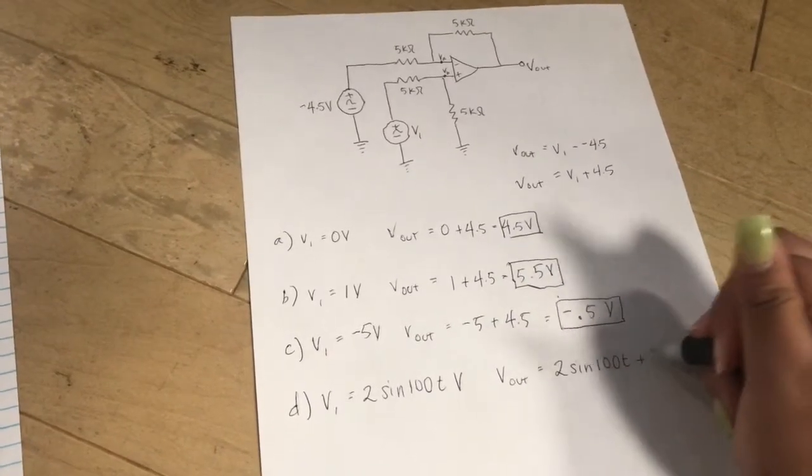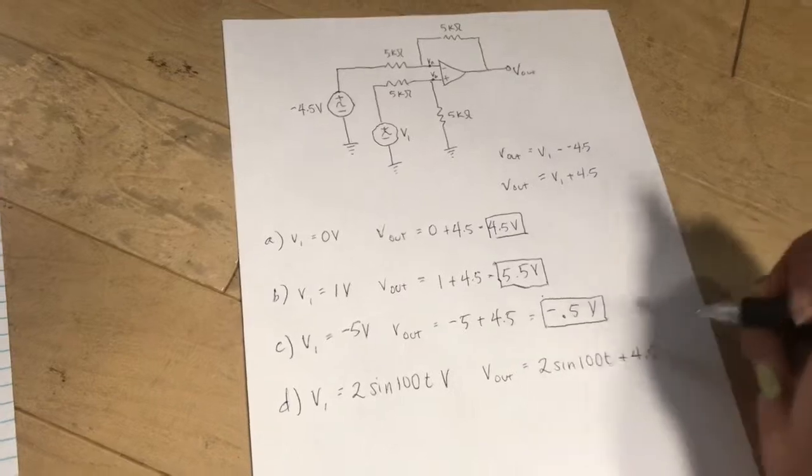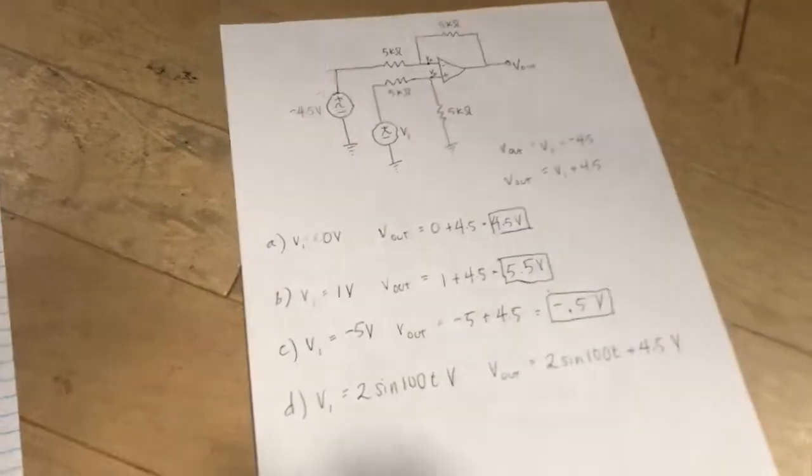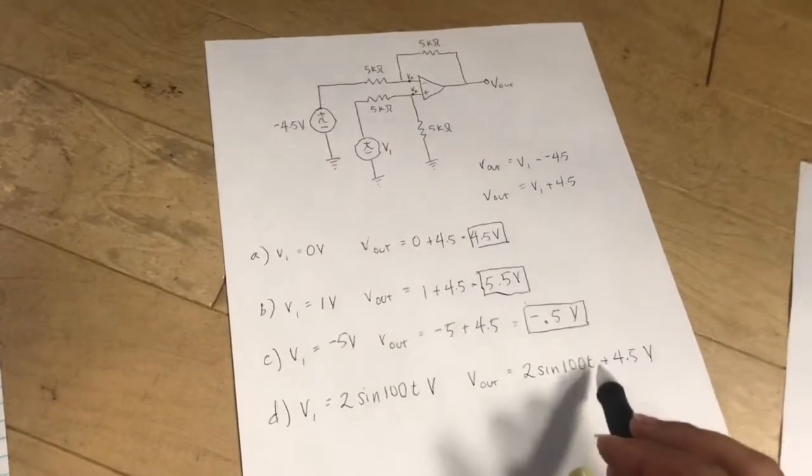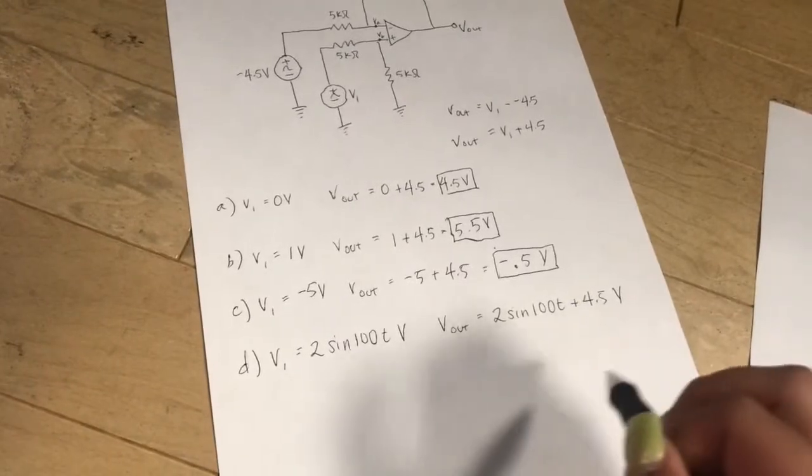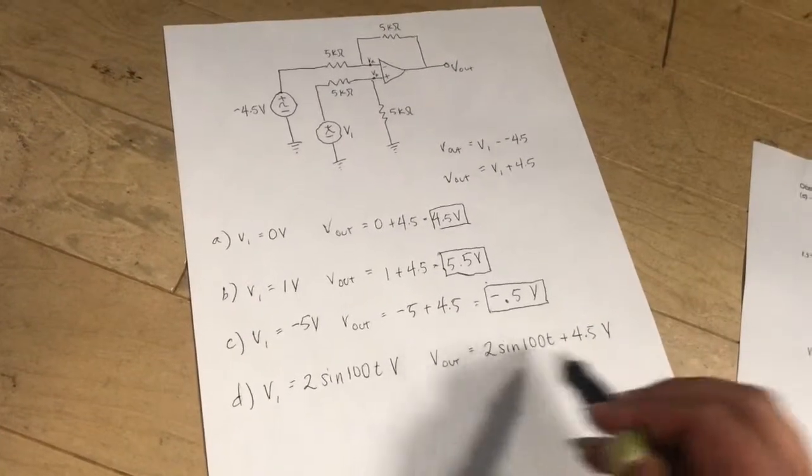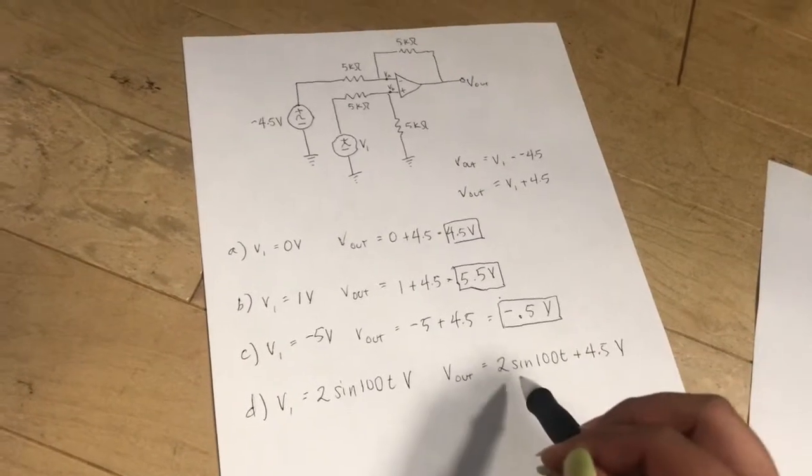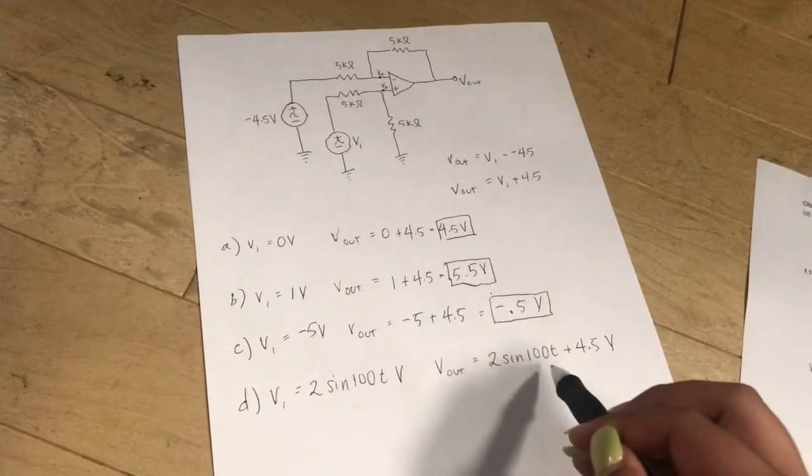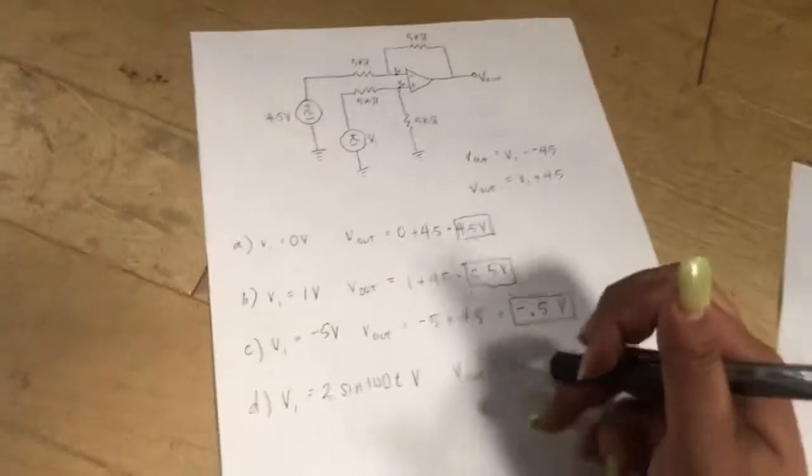Because this still has a variable in it, you cannot add it to the 4.5. So when they give you a T, then you can combine them. But Vout is 2 sine 100 T plus 4.5 volts.